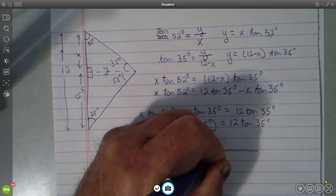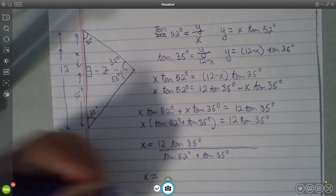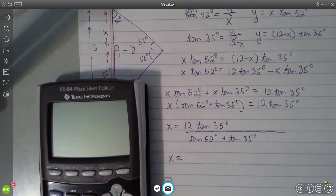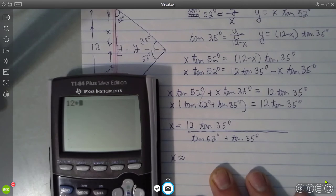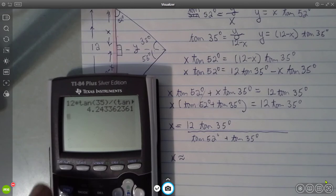And these are all numbers, so that's something we can do on our calculator. And we'll carry out a few digits so we get some good accuracy and we'll be able to use this computed result somewhere else if we need to. 12 times the tangent of 35 degrees divided by, don't forget parentheses here, tangent of 52 degrees plus the tangent of 35 degrees. And I get about 4.2434.